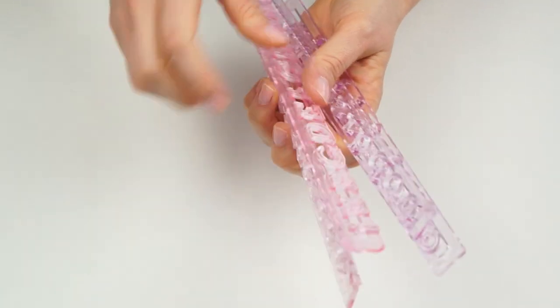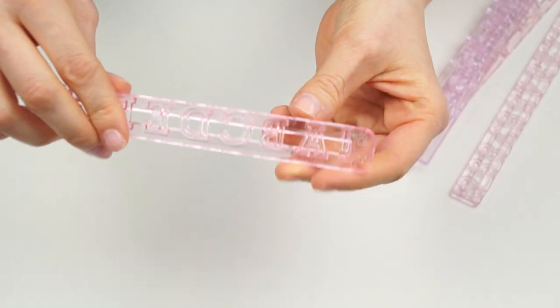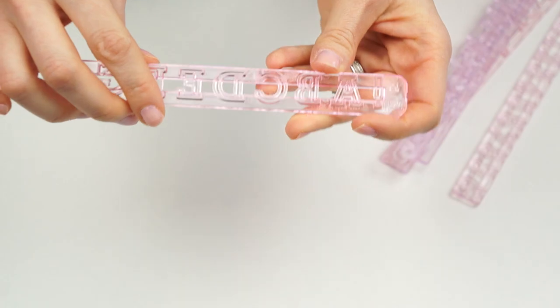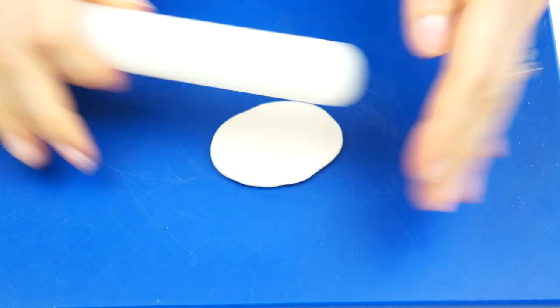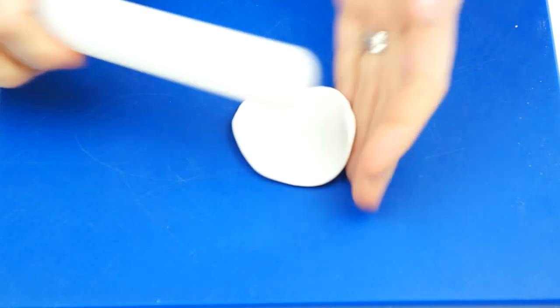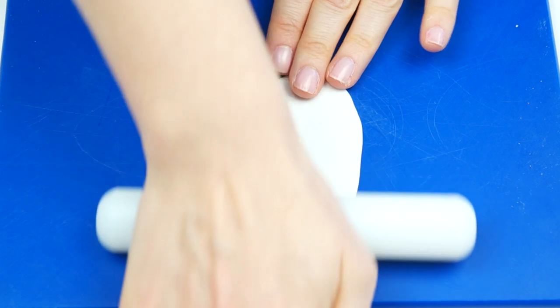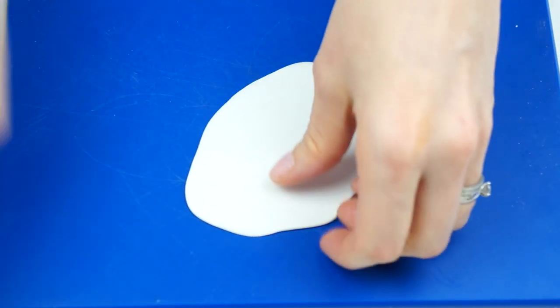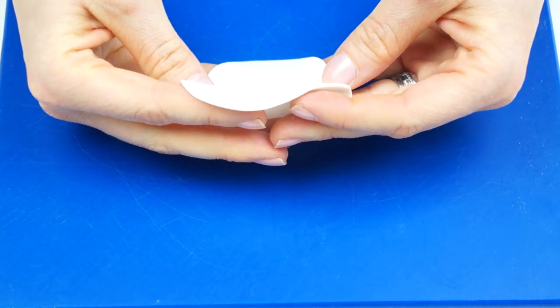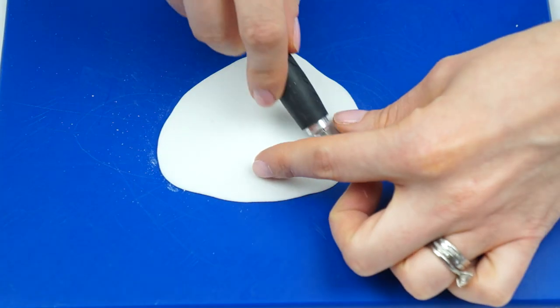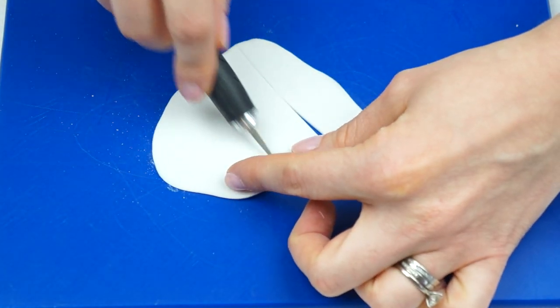Now this is just one style of letter cutter that you can get. You can also get plunger cutters or ones where you just simply cut out your letter. For the Tappits you will need to use something that's quite firm so a gum paste or a modeling paste and you want to get it quite thin so around a millimeter in thickness.